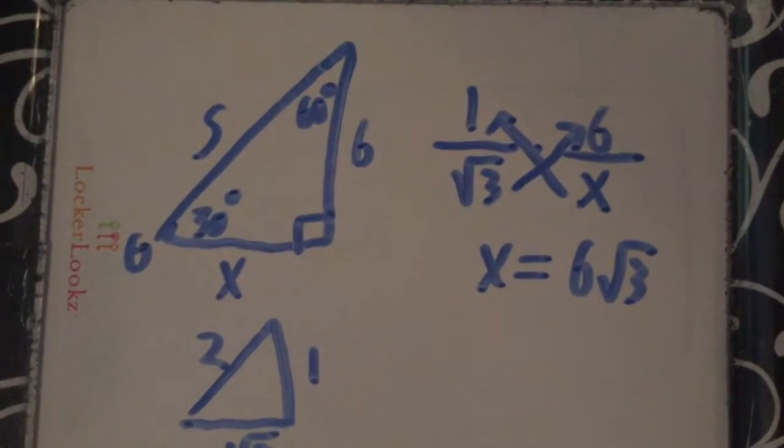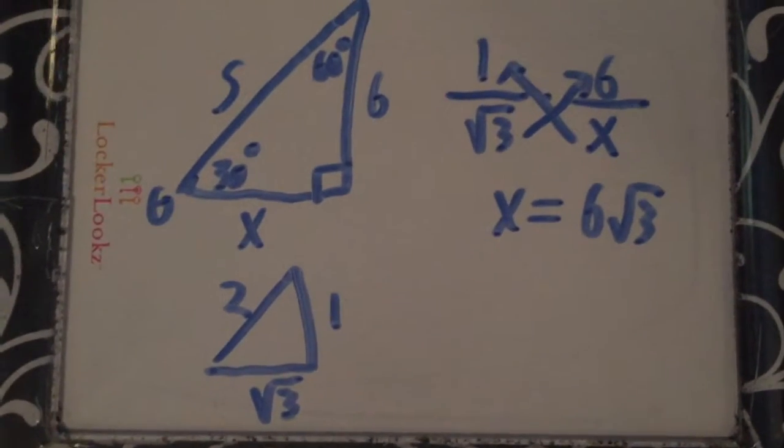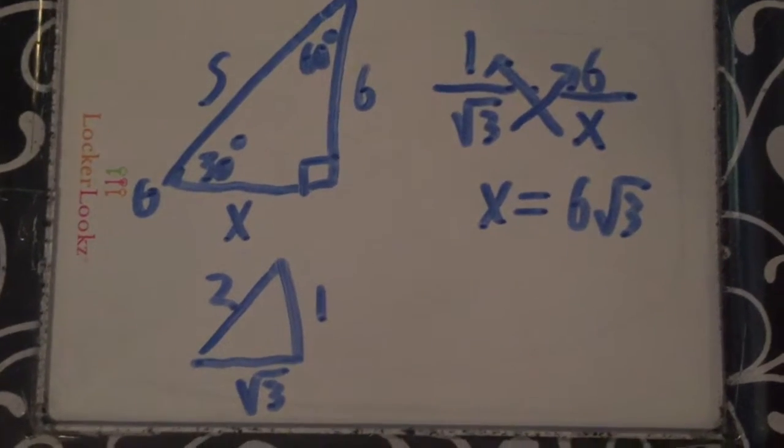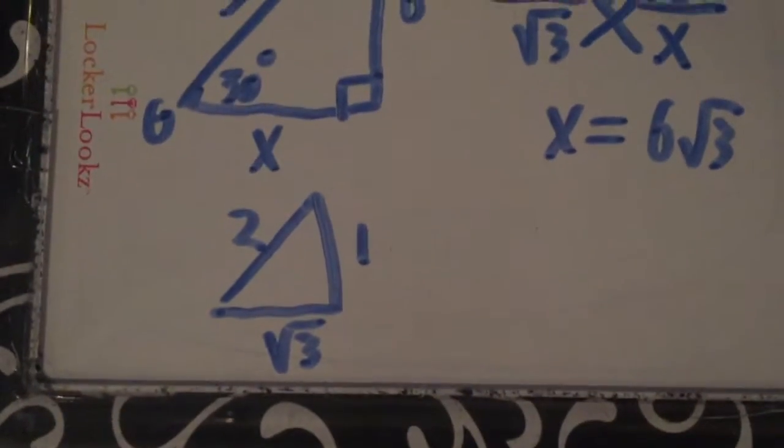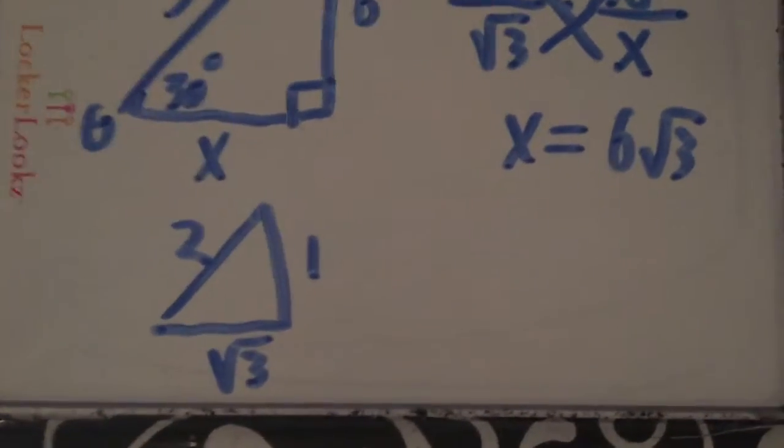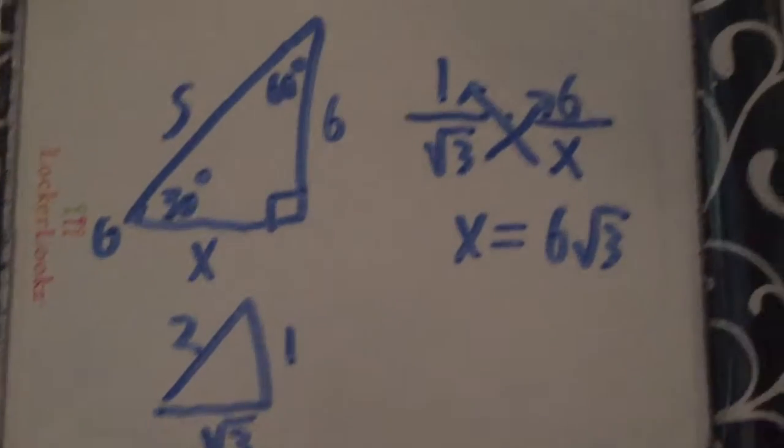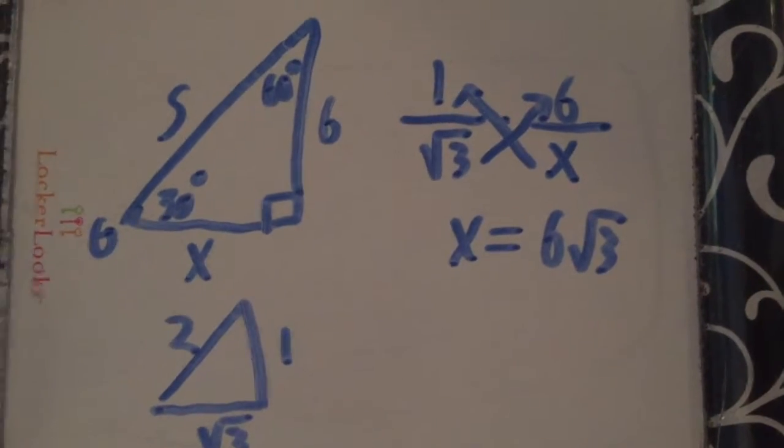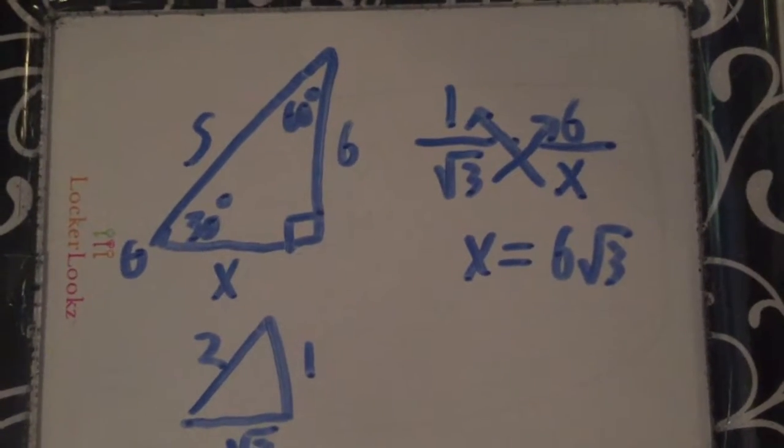For this equation our triangle is a 30-60-90 triangle. We can determine x using the ratio for the sides of the actual triangle and the sides of the 1, 2, square root of 3 side triangle. With this ratio we can determine that x equals 6 times the square root of 3.